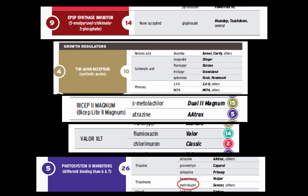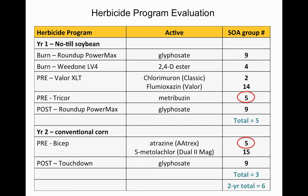Another modification: add metribuzin to the pre-emergence bean program alongside Valor XLT, possibly for marestail control. Looking up metribuzin on the chart shows it's actually the same site of action as atrazine — Group 5. Adding it to the soybeans takes us to 5 sites of action in the beans: 9, 4, 2, 14, and 5. The corn still has 3. But because glyphosate is used both years and Group 5 is used both years (metribuzin in beans, atrazine in corn), both fall out — so instead of 8, we still have a total of 6.